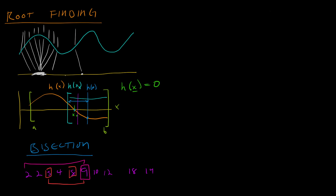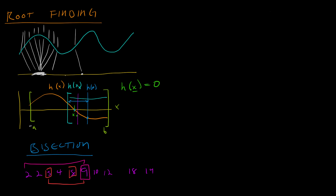Second, you need a good bracket — you must find an a and a b such that a is to the left of the root and b is to the right of the root. Third, you have to know that there's only one root inside your bracket. If there are multiple roots in your bracket, you don't know which one you'll get. If there's only one root, you're guaranteed to find it.